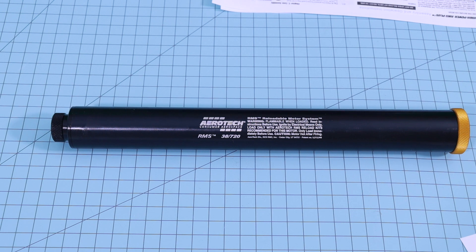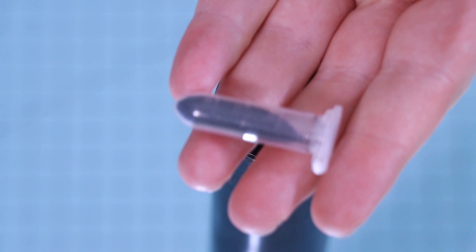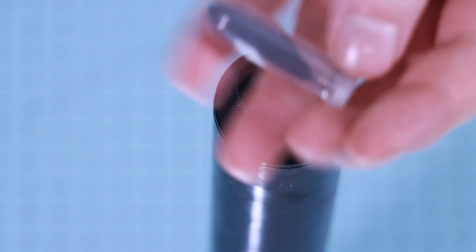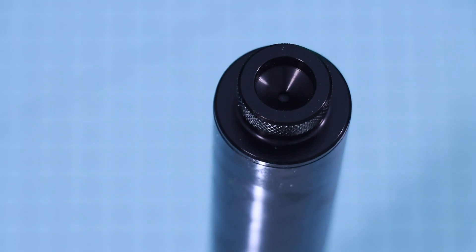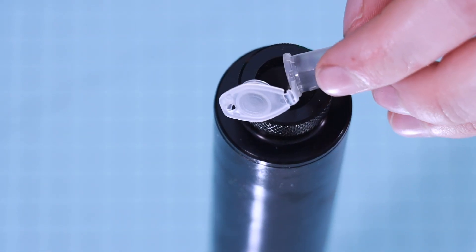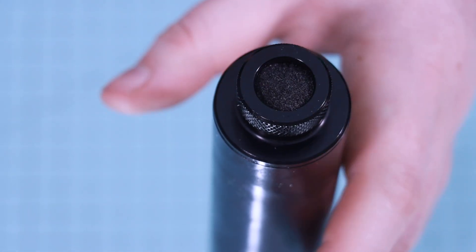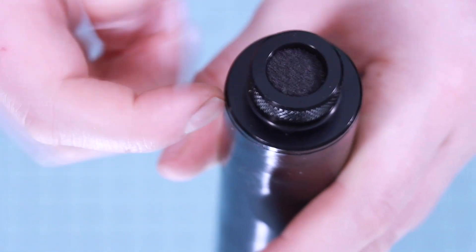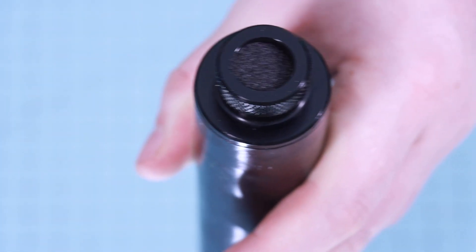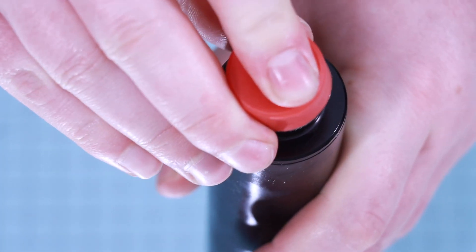Here's the completed motor. But if you want the ejection charge, you still have to add some black powder. Here we have the one and a half grams of included black powder. Let's open the little vial and pour the contents into the little cup at the top.